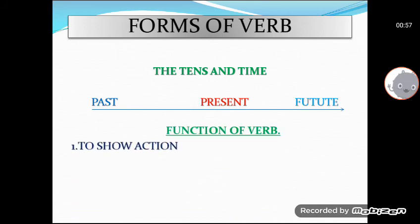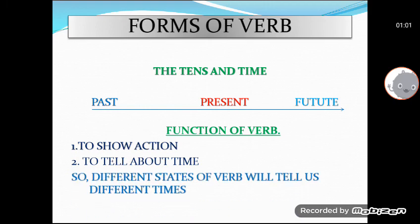So the function of verb is to show action and to tell time. It means that different states of verb will tell us different times. The state of verb, if it may be in the past, it will tell you the time of past. If there will be the second form — the past form of verb.